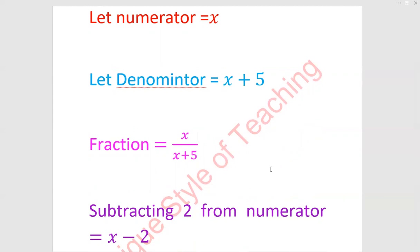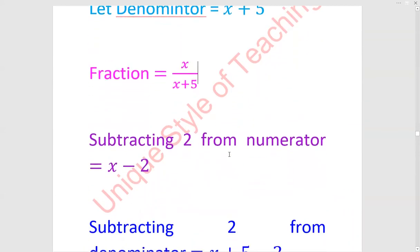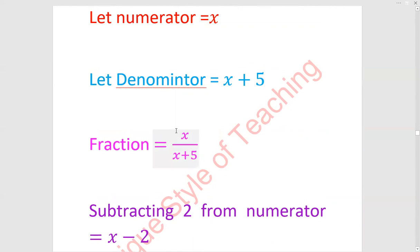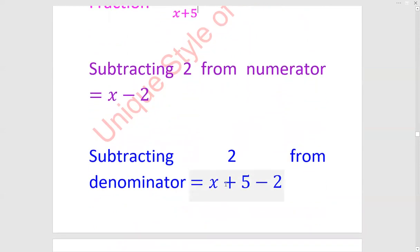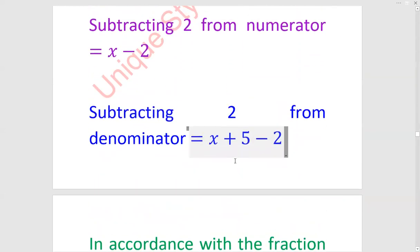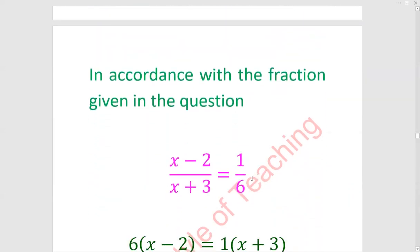The fraction will be x upon x plus 5. x is the numerator and if we subtract 2, it will be x minus 2. Similarly, the denominator is x plus 5. It will be x plus 3.